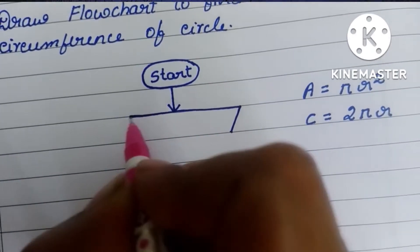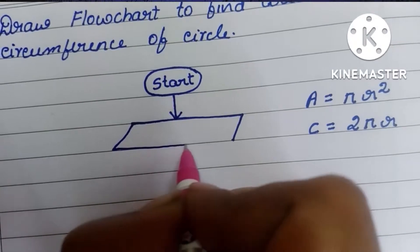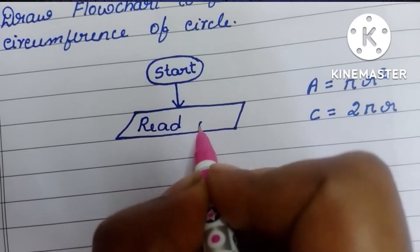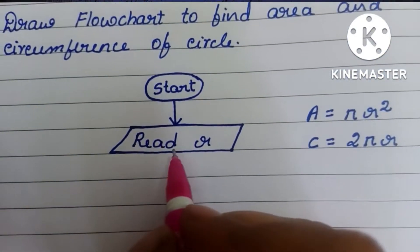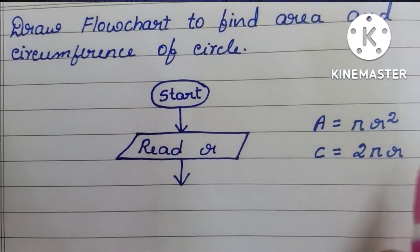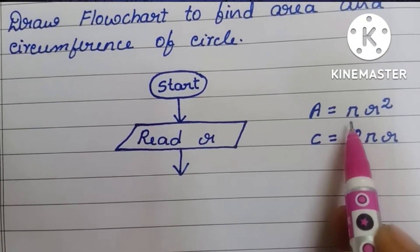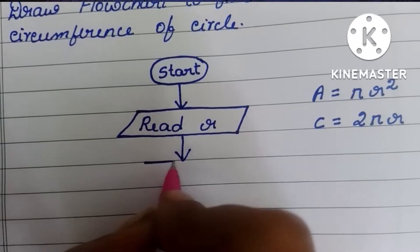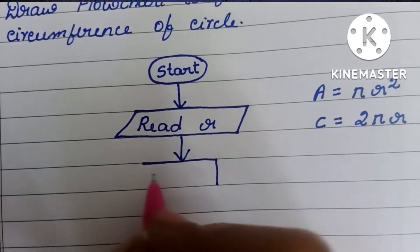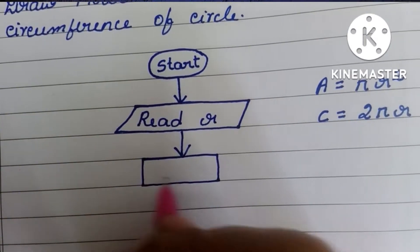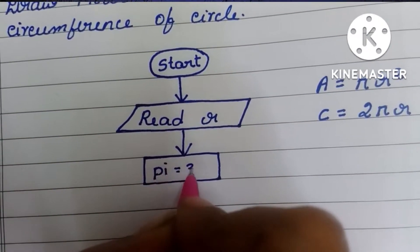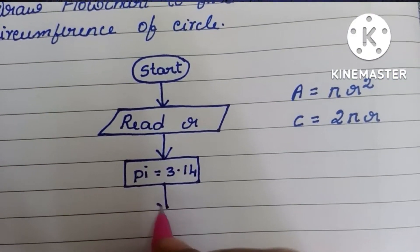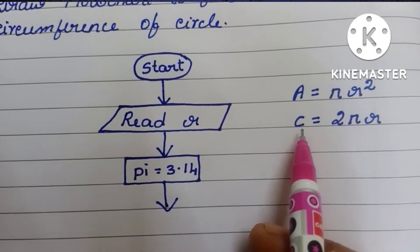Input values are always written within a parallelogram shape. So we draw a parallelogram and inside it write 'read r'. Next we need to declare the value of pi. Pi is equal to 3.14. This is needed to calculate both the area and circumference of the circle.